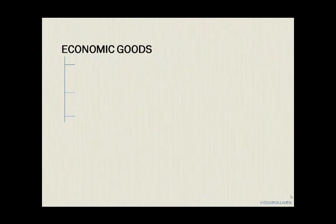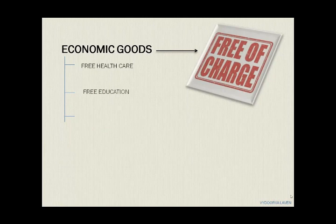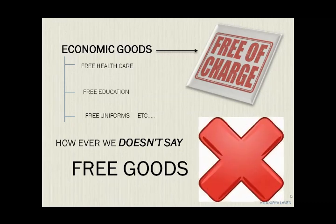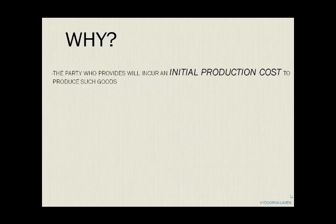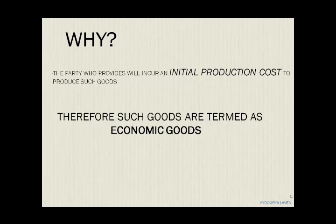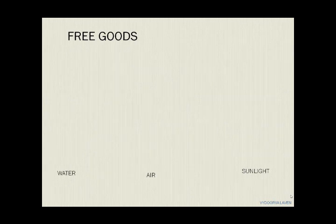Sometimes economic goods are provided to certain parties free of charge. Major examples include free healthcare, free education, and free uniforms. However, we do not call such goods 'free goods,' because the party who provides them still incurs an initial production cost to produce such goods. Even though products are given free of charge to society, the owner incurs an initial production cost — therefore such goods are termed economic goods.